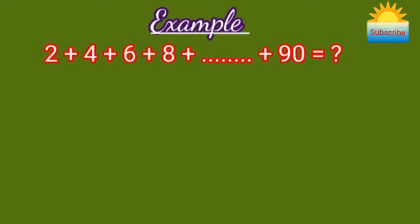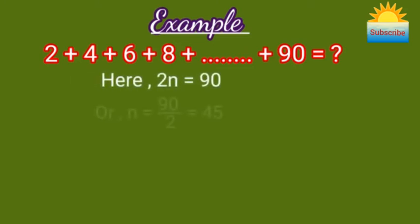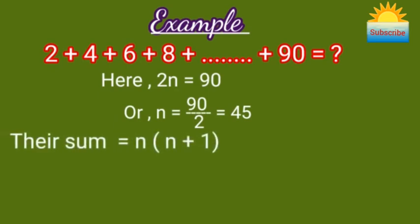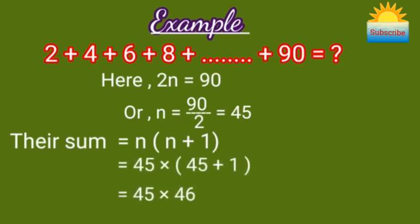What is the sum of even numbers from 2 to 90? Here we need to find n, the number of even numbers from 2 to 90. So 2n equals 90, meaning n equals 90 divided by 2, which is 45. Their sum is n(n+1), that is 45 into 46, which equals 2070.